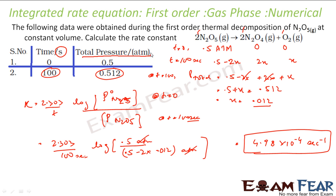Please note: here total pressure is given. If the equation gives the pressure of N₂O₅ itself, then it is very easy. But generally in reactions taking place, it is difficult to find partial pressure, and it is very easy to find the total pressure of the container where the reaction is taking place. So generally the data is in terms of total pressure.